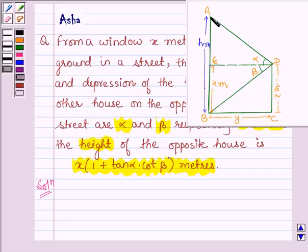Now the angle of elevation is alpha from where he is observing the top of the house is point A, and from the same point he is observing the bottom of the house which is the point B and the angle of depression is given to us as beta. So this implies this angle is also beta. We have to show that AB or H is equal to x times of 1 plus tan alpha into cot beta meters.